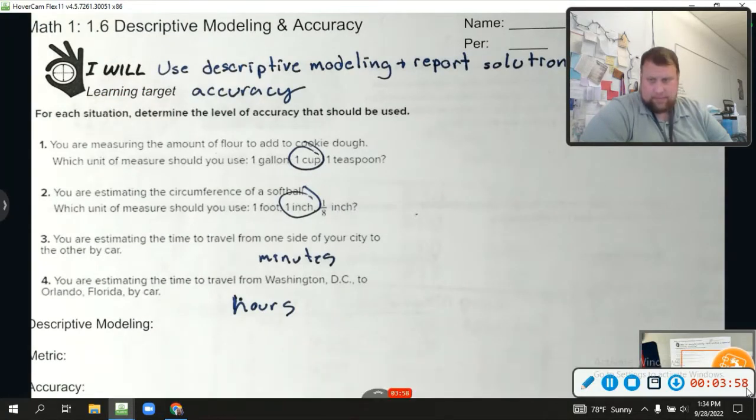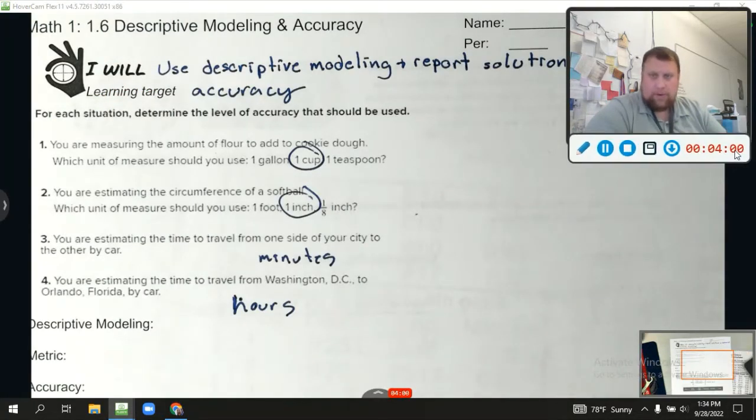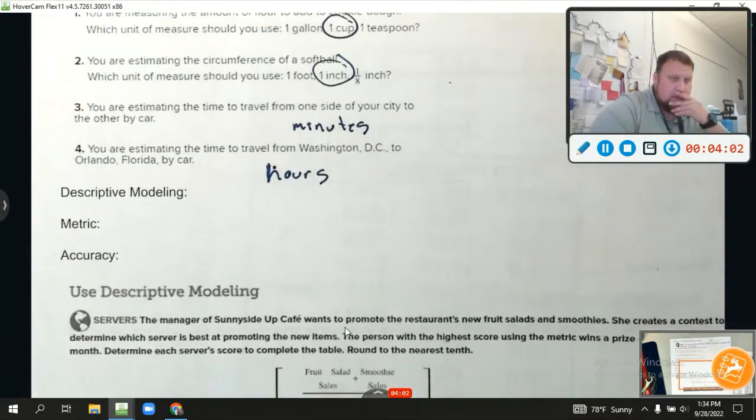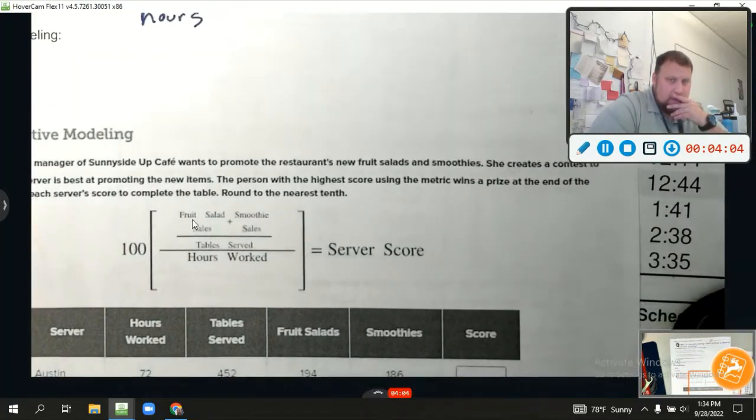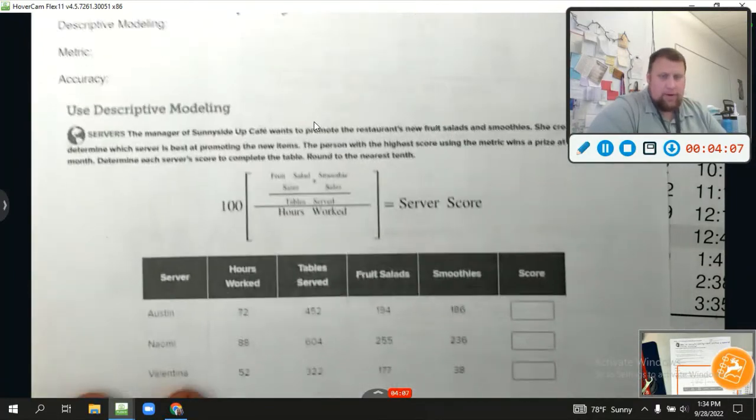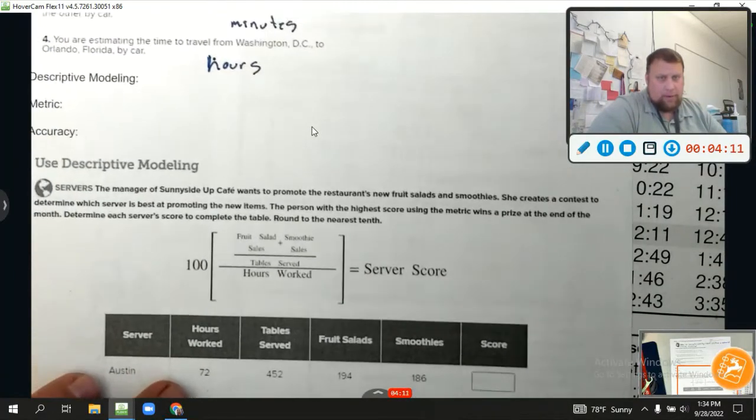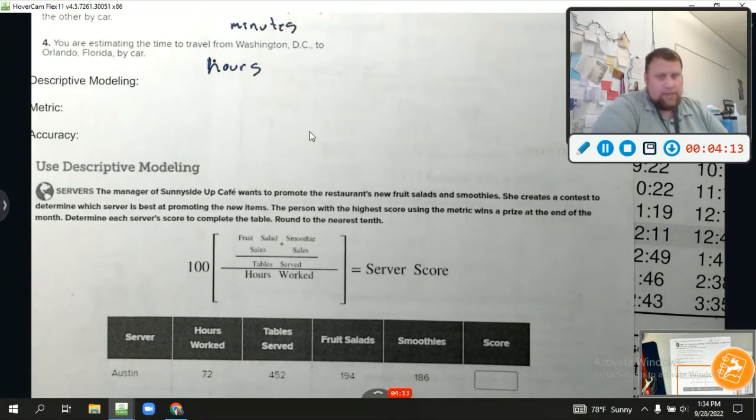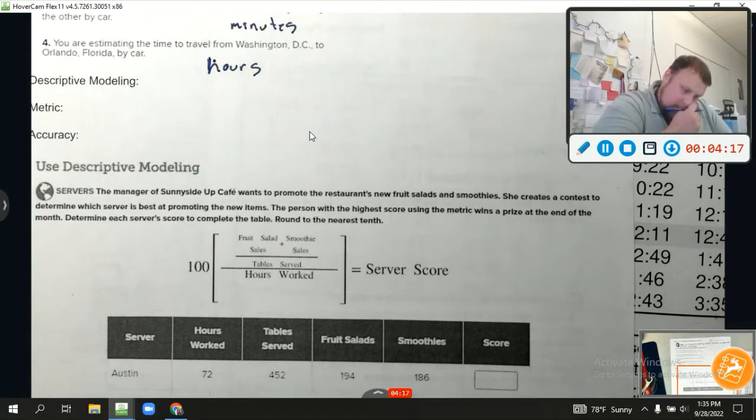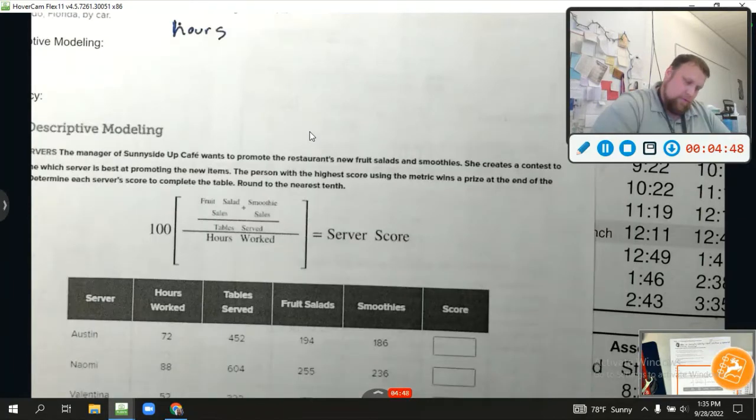Okay, let's go ahead and go on to the actual work of the situation. Move things around. Okay, here we go. I'm just going to make this a little smaller. You should have your own copy, so we'll probably be looking at that, but I'll read it. The manager of Sunny Side Up Cafe wants to promote the restaurant's new fruit salads and smoothies. She creates a contest to determine which server is. For example, to do Austin, we're going to add these.